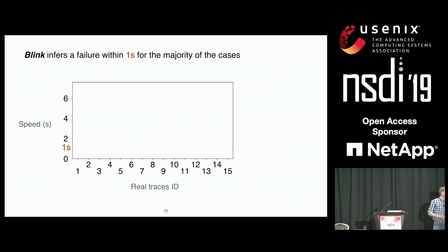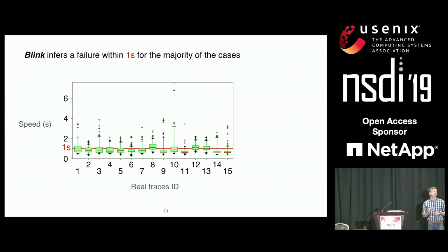What about speed? We took the synthetic traces with failures and measured the time it takes Blink to infer failures. It turns out that for most traffic traces, Blink is able to infer failures within one second. Even in the worst cases — between 6 and 8 seconds — it's still faster than BGP. So we are faster than BGP by far.